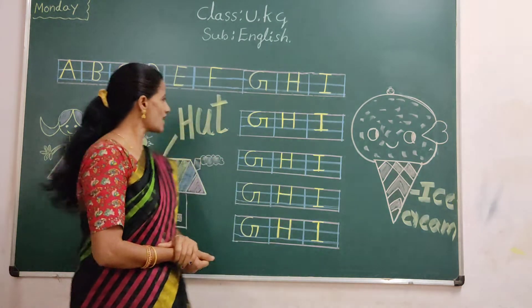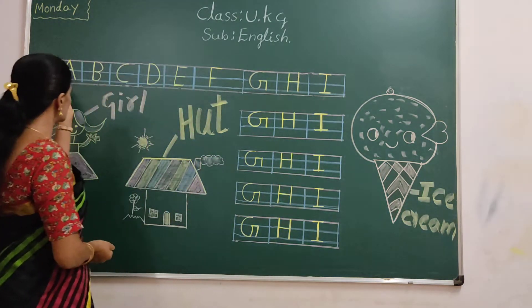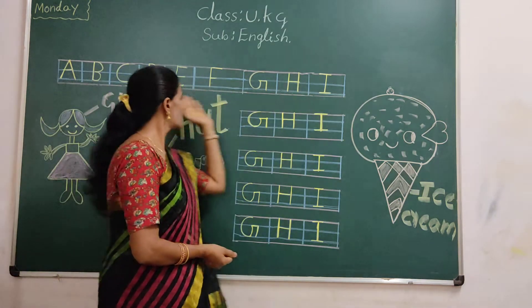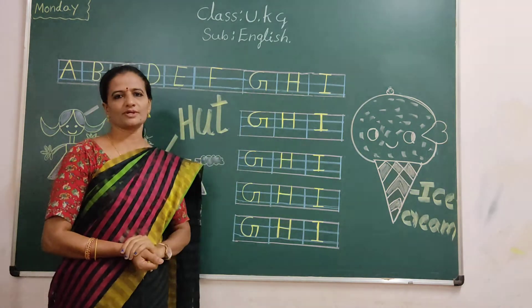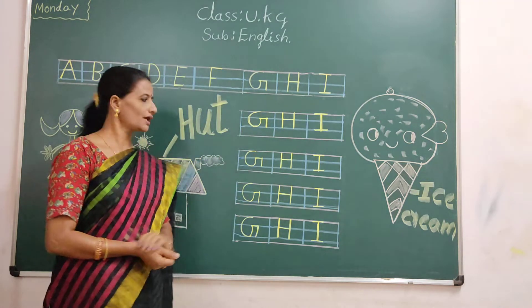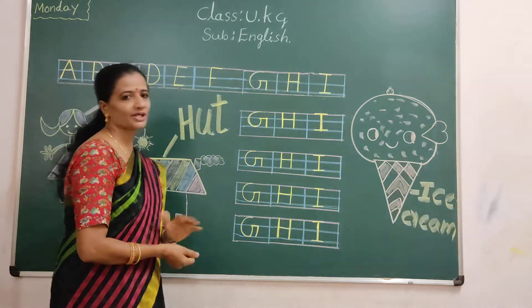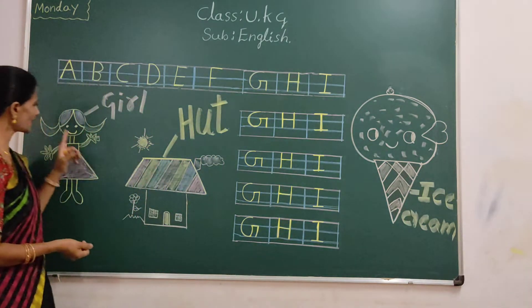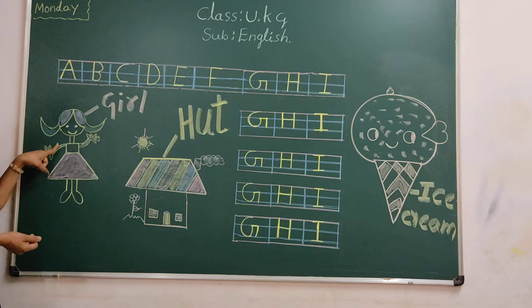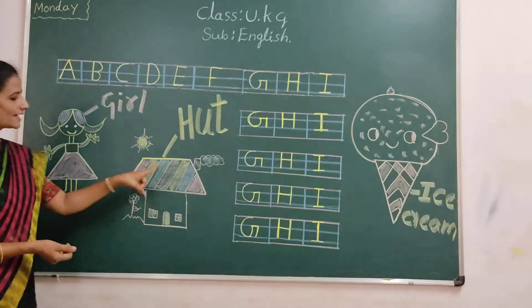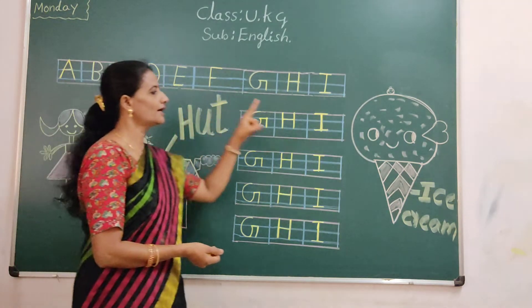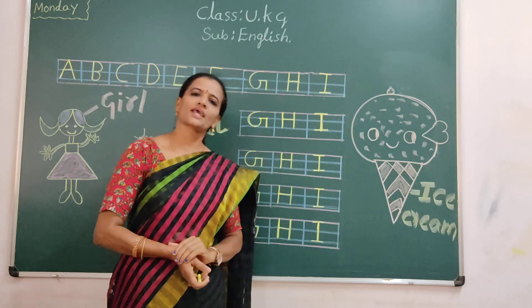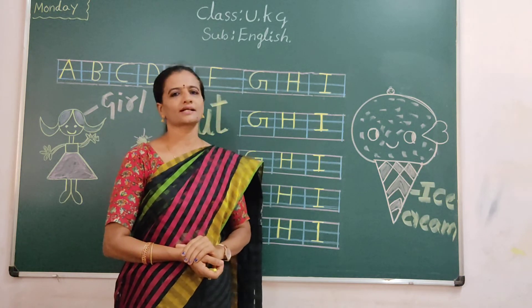Okay children. So everyone learn and practice these English letters. You have to write through the whole page. Once again — G for girl. H for heart. I for ice cream. Say and write.